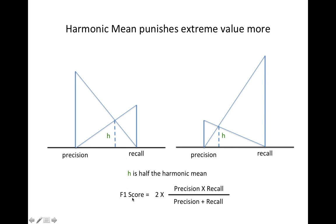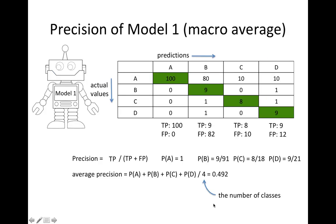The F1 score is the harmonic mean, and the equation is: 2 times precision times recall, over precision plus recall. In order to find the F1 score, we need to know the precision and recall first.